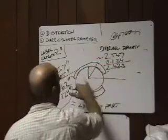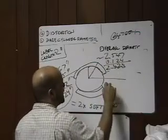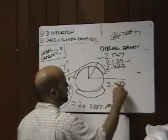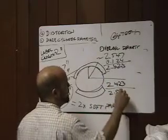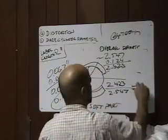We come up with 2.423. 2.423 is the diameter of everything up to the soft part of the plate. Now all we have to do to calculate distortion is take that diameter, 2.423, and divide it by the overall print diameter, 2.547, and that equals our distortion factor.